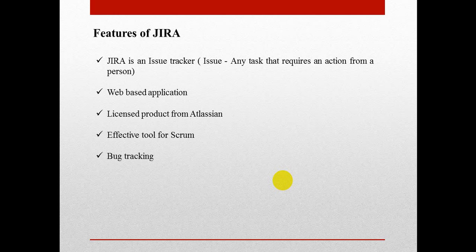Jira is also useful for bug tracking. If you want to report defects to your developer, you can use Jira for bug tracking. Basically, Jira is a project management tool, meaning developers can use Jira, testers can use Jira — it can be used by any project team member. For example, if I am a tester and I want to report a defect, I will go to the tool, create an issue, and report it to the developer.